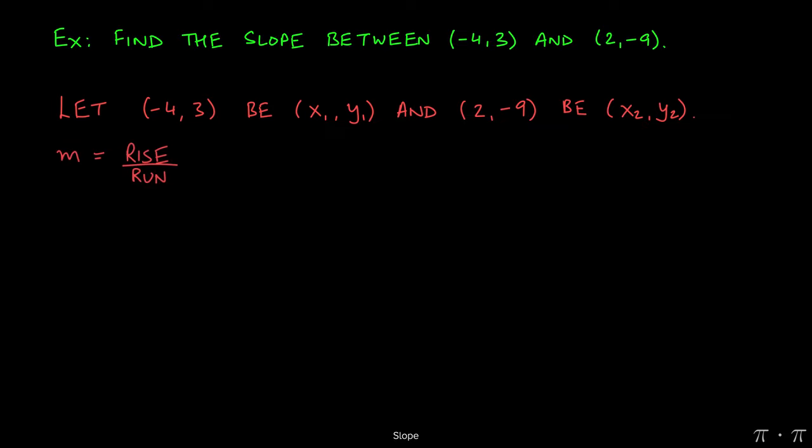Hopefully you remember that the slope is always given by rise over run, but it can also be represented as change in y over change in x, and this is where the formal formula comes from.